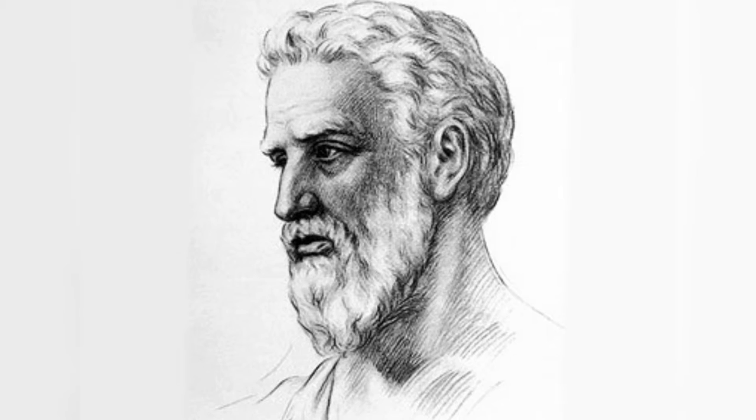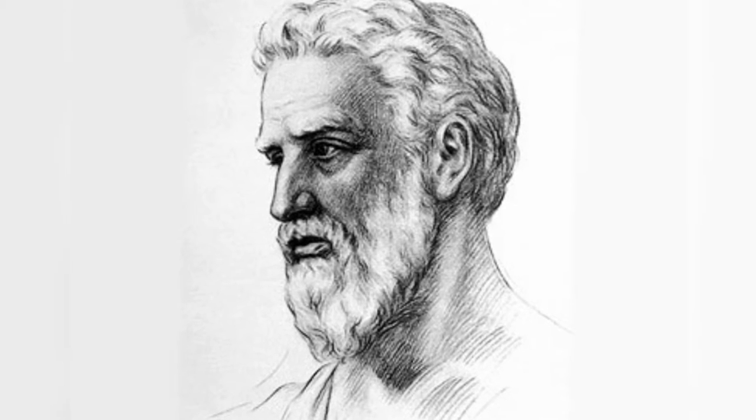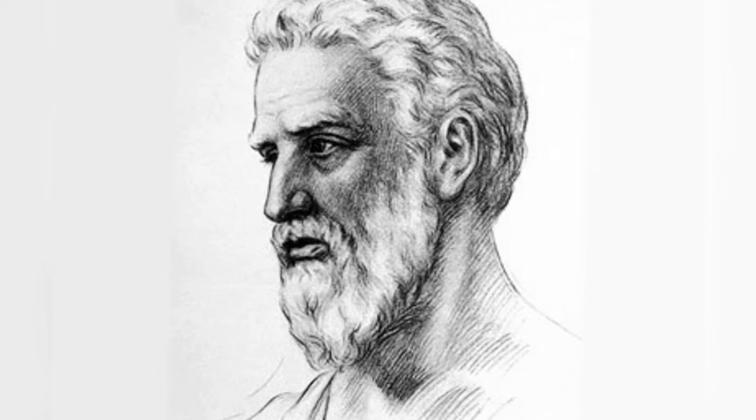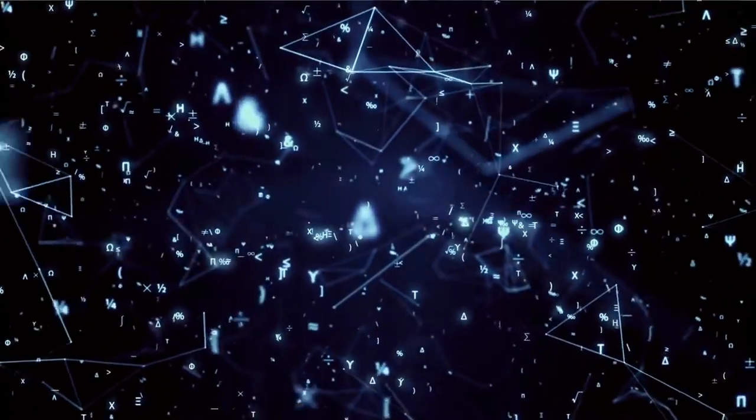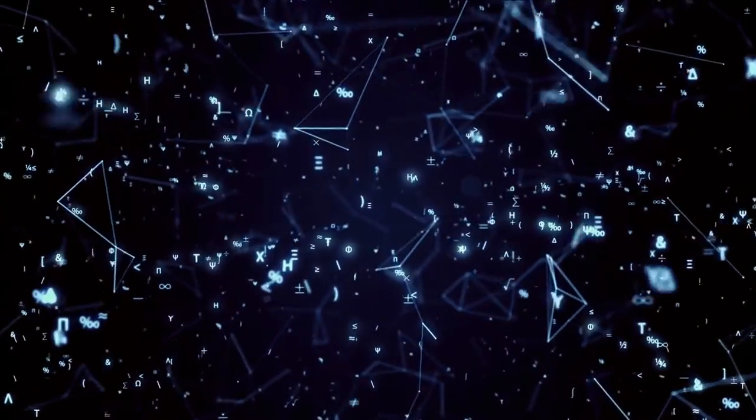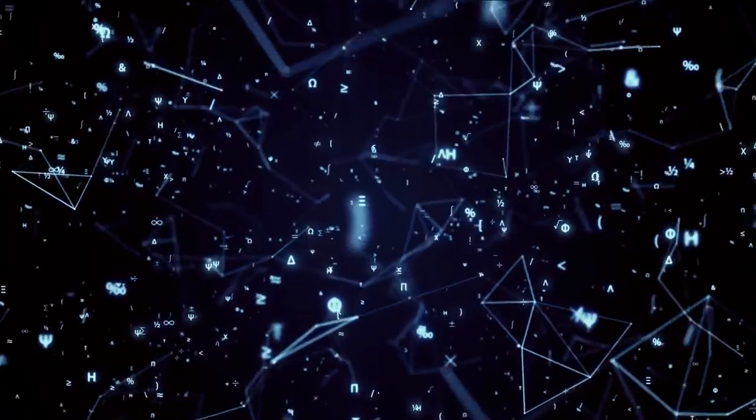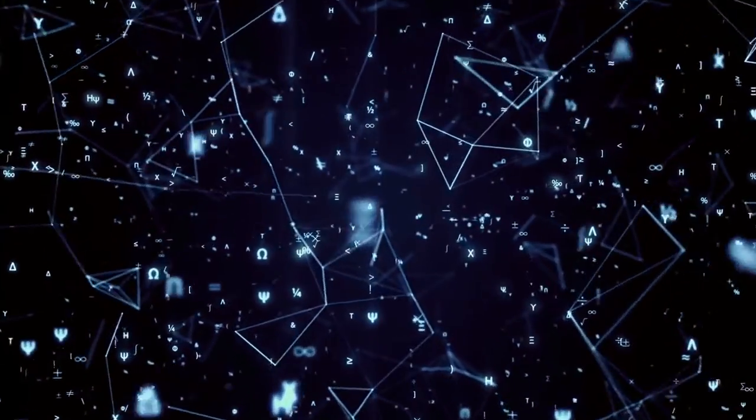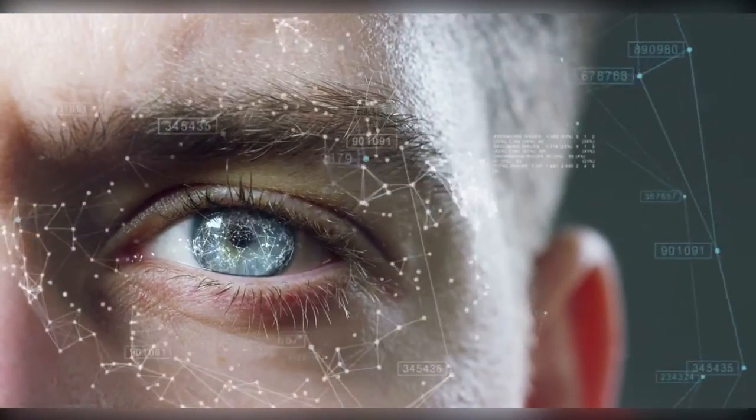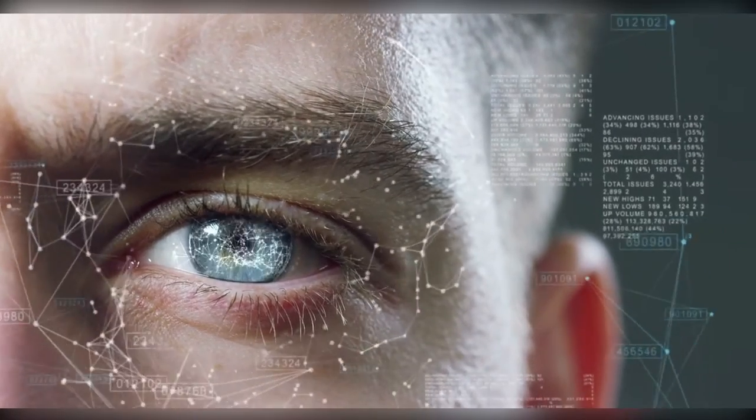Rather than assuming that everything happened because one of the Greek gods commanded it, Thales looked for patterns in nature to explain how the universe operated. He did away with superstitions and replaced them with science. He was the first to apply deductive logic to discover new conclusions in geometry, and he elevated mathematics to a new level by requiring the proof of theorems.